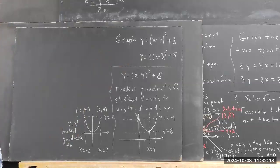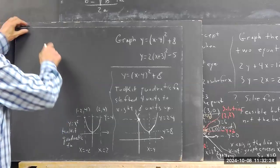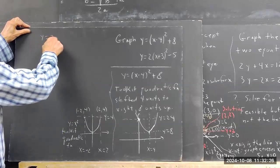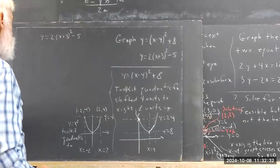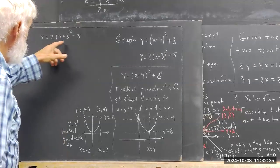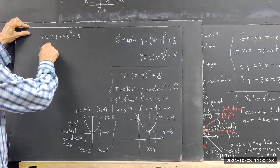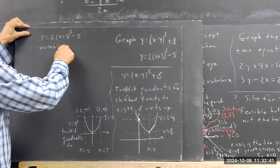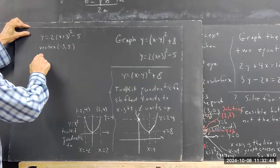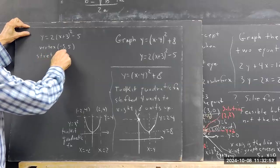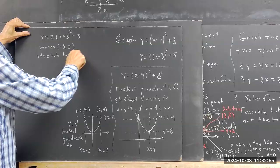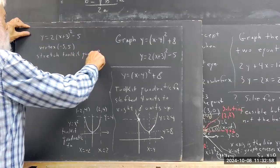This one we're going to shift three units to the left and five units down. So the first thing we know is we're going to have a vertex at negative three, negative five. And we have to consider the quadratic function — we also stretch it vertically.